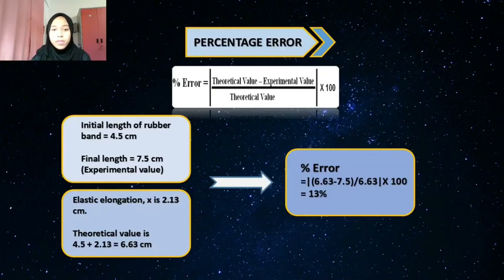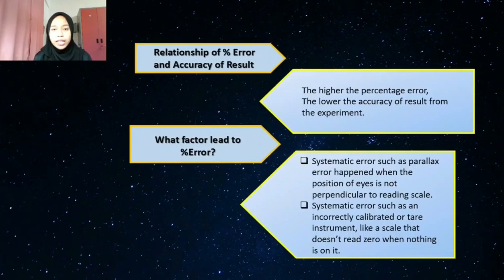Last equation is percentage error. It is equal to 6.63 minus 7.5 over 6.63 times 100 and equal to 13%. The relationship of percentage error and accuracy of result: the higher the percentage error, the lower the accuracy of result from the experiment. The factors lead to percentage error is the systematic error, such as parallax error happen when the position of eyes is not perpendicular to reading scale. Next, incorrectly calibrated or tared instrument, like a scale that doesn't read zero when nothing is on it. So that's all from me.